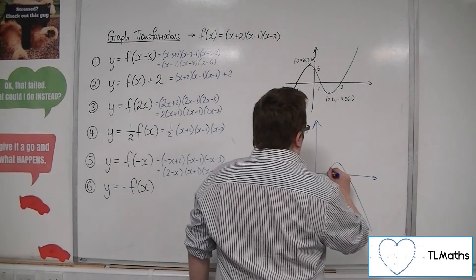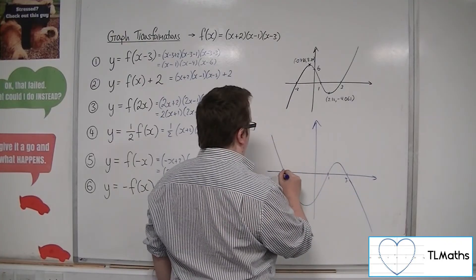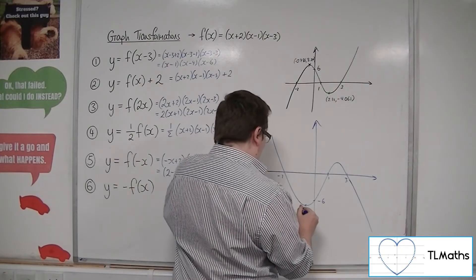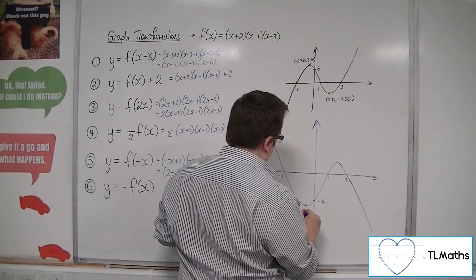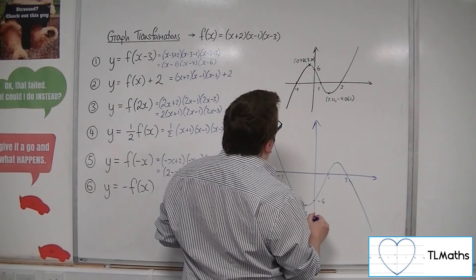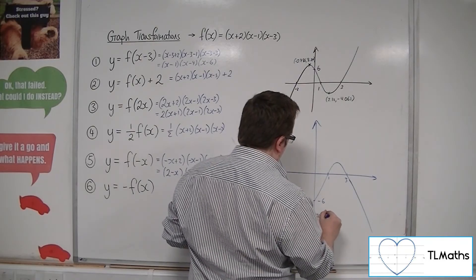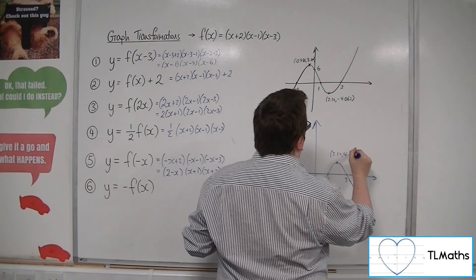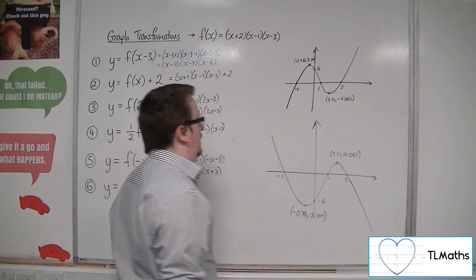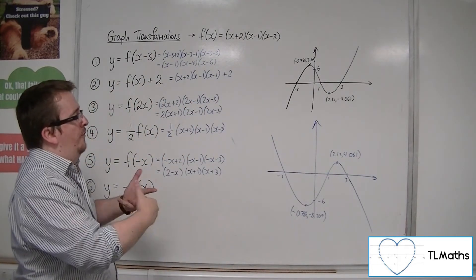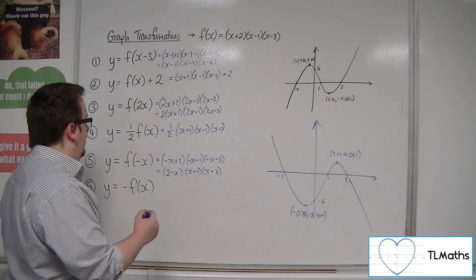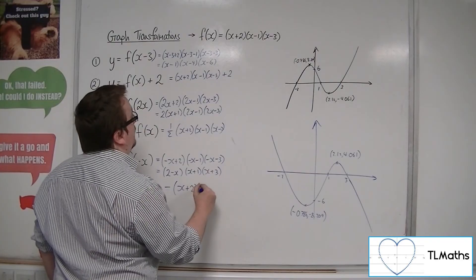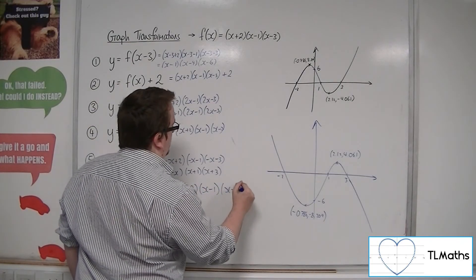This point is going to be (-0.786, -8.209), and this point will be (2.12, 4.061). So, every point has been reflected in the x-axis. And so, that's the same as just putting a minus sign outside all three of those brackets outside of the f(x).